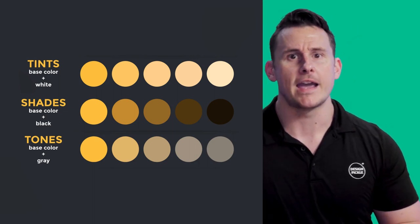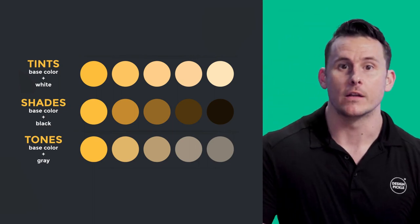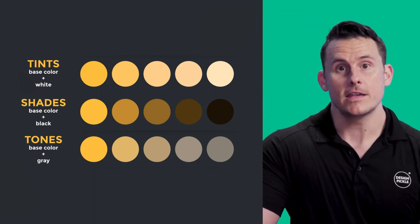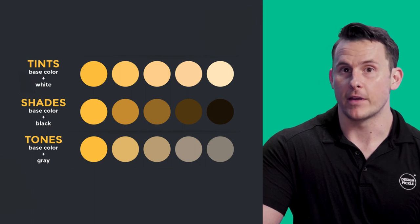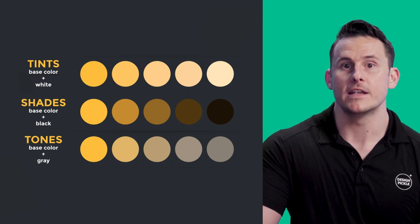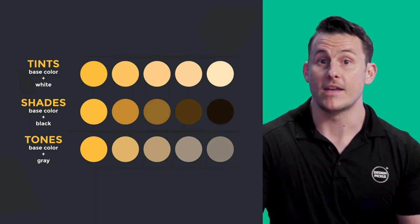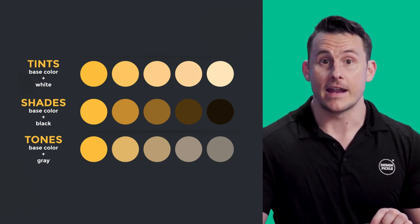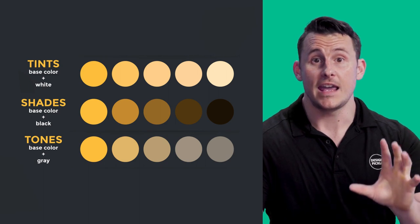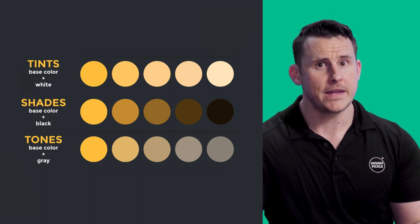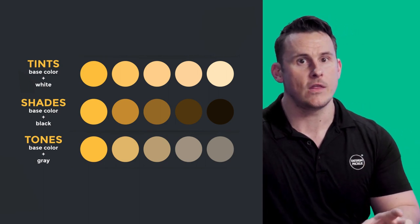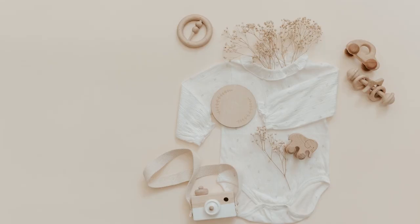Tones are created by adding gray to a color — so think both black and white — which adjusts a color's vibrance. A pure color is saturated, vivid, and intense. When gray is added to a color, it becomes duller. It may not sound appealing, but this is how you get those beautifully calm, neutral palettes and earthy tones.